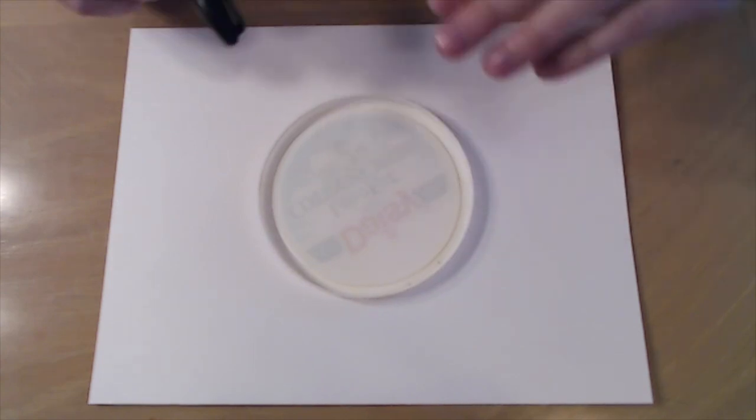Now soccer balls are kind of tricky but here's some easy steps on how to do it. So you can draw it freehand or you can just trace something circle like a lid.